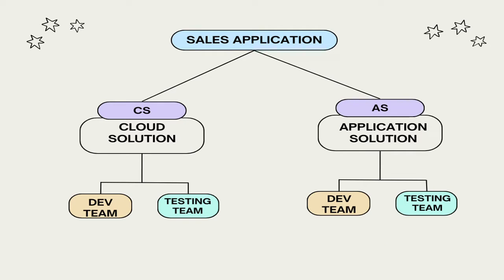Is it still confusing? Let me put this a different way. Imagine we are scheduling a daily standup for these activities. For cloud solution I will have a separate meeting because it is completely different from application solution work. So I'll have a separate daily standup for cloud solution and another daily standup for application solution.